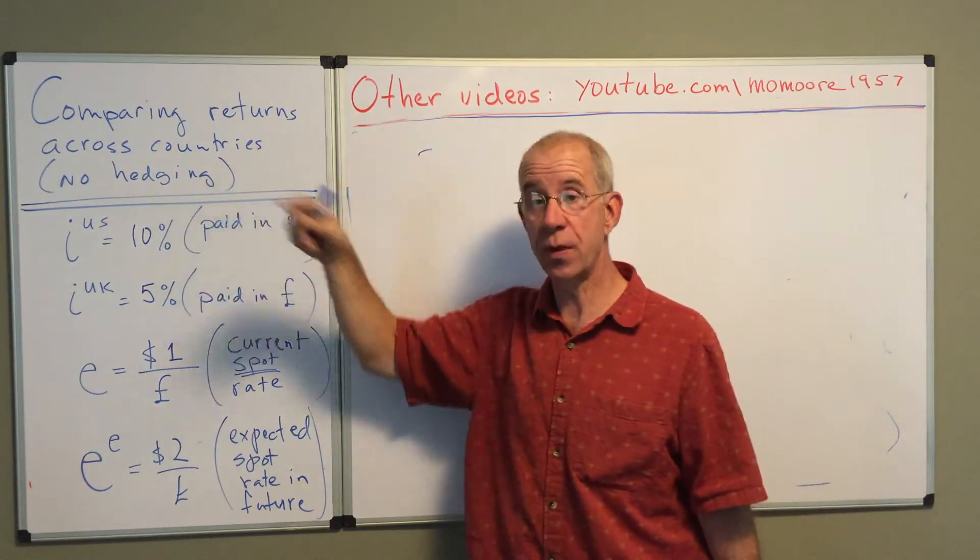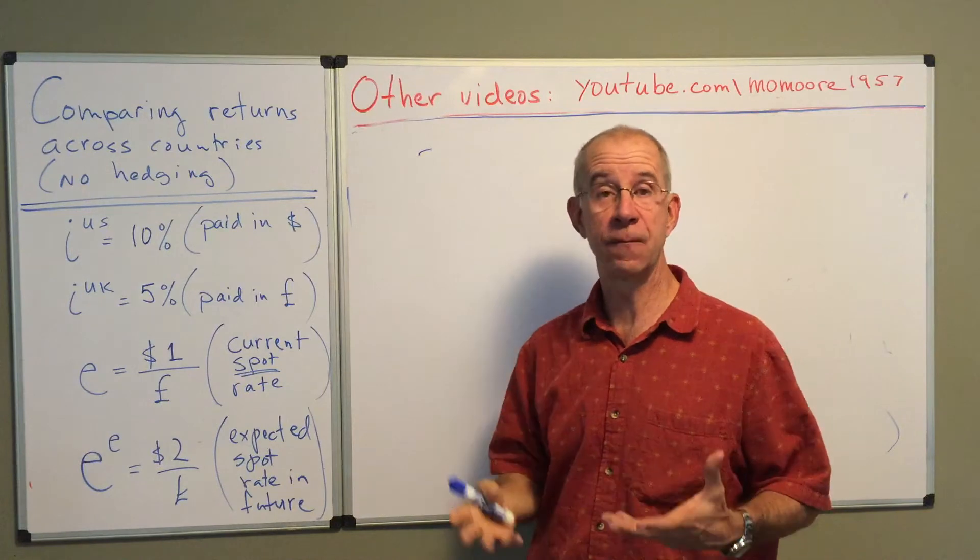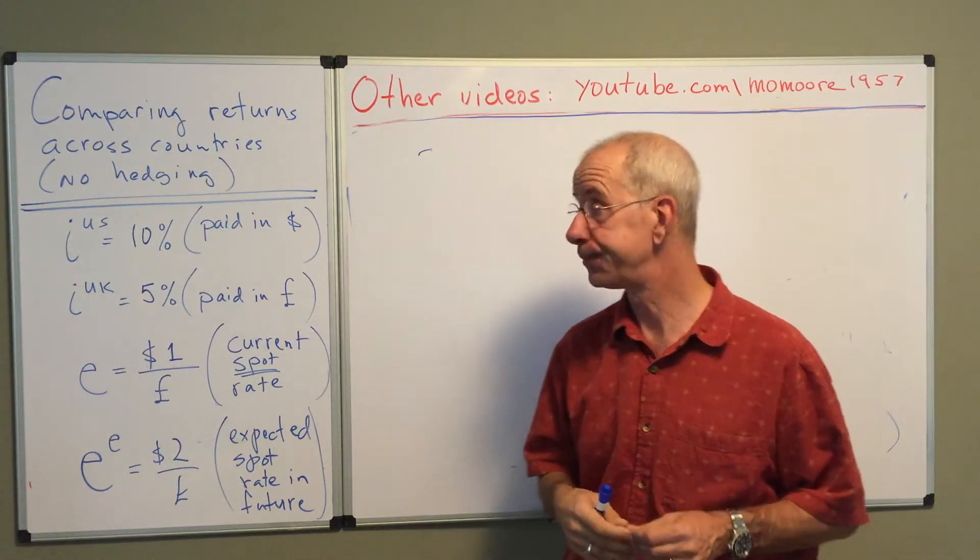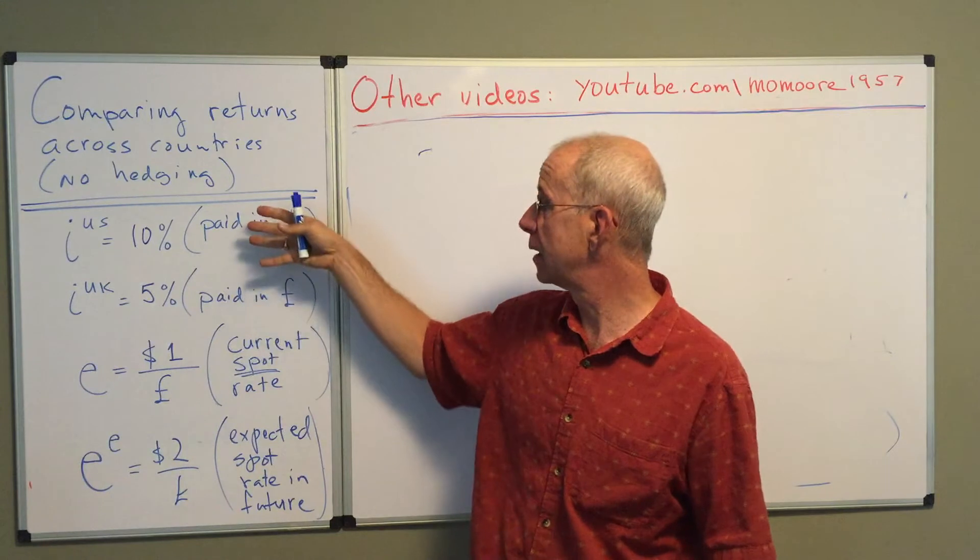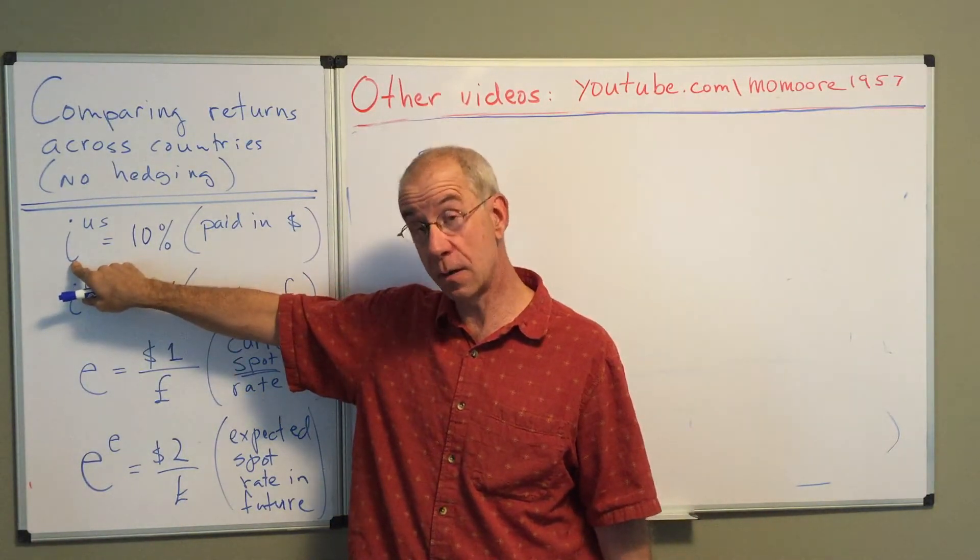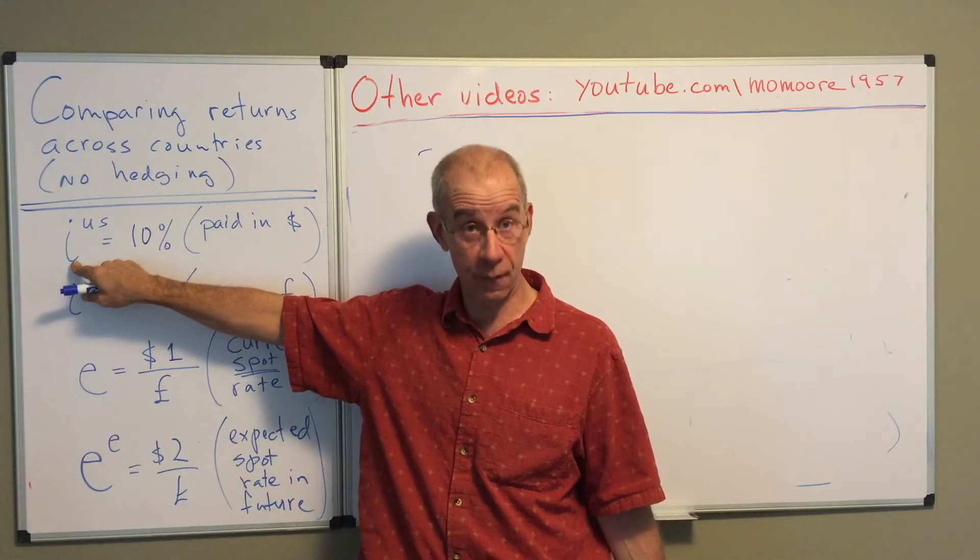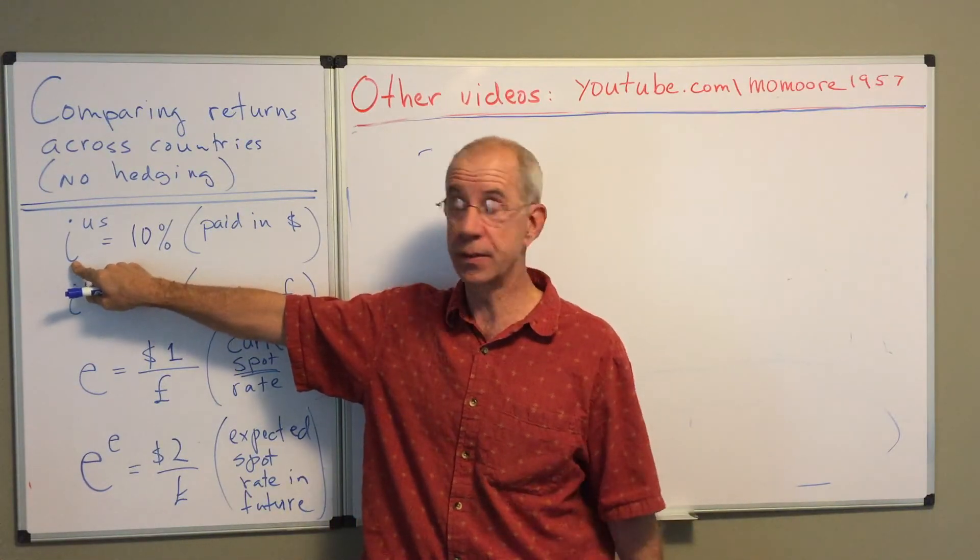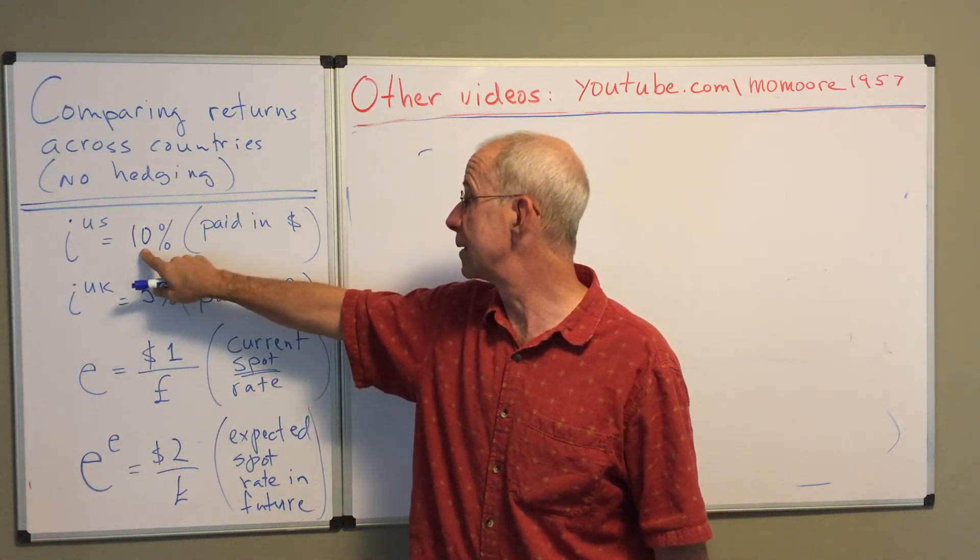We're going to do this first with no hedging, no use of forward or futures market. Let's start out with these two interest rates. The U.S. interest rate on bonds, on government bonds with essentially no risk of default, paying 10 percent.